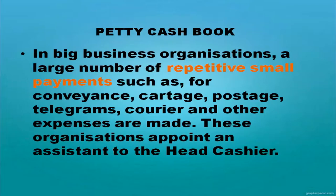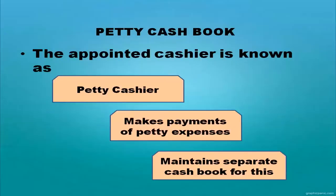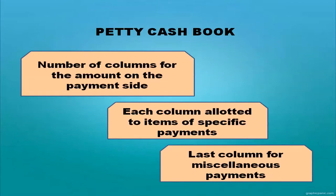Coming to the petty cash book: in large business organizations, a large number of repetitive small payments such as conveyance, cartage, postage, telegrams, courier, and other expenses are made. These organizations appoint an assistant to the head cashier known as the petty cashier, who makes payments of petty expenses and maintains a separate cash book. In the petty cash book there are a number of columns for amounts on the payment side, each column allotted to items of specific payments like postage, conveyance, refreshment, etc., with a last column for miscellaneous payments.